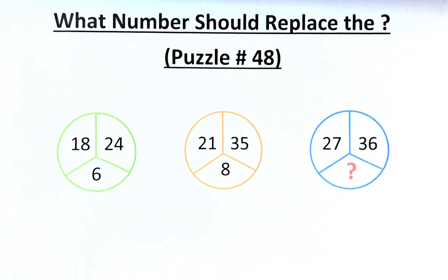In the green circle we have 18, 24 equals 6. Orange circle 21, 35 equals 8, and in the blue circle we have 27, 36 equals the question mark.